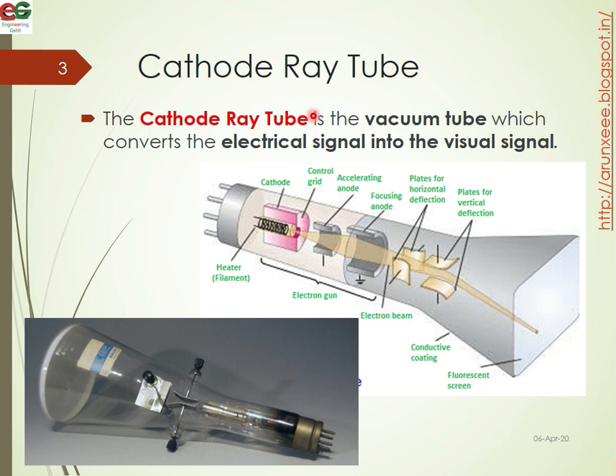CRT is a short form. The cathode ray tube is a vacuum tube which converts the electrical signals to the visual signals.